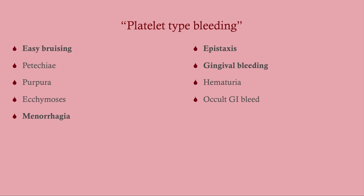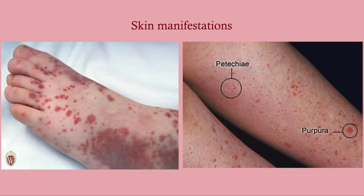Platelet-type bleeding has several manifestations. The most common are easy bruising — patients get bruises and don't know where they came from — petechiae, purpura, ecchymosis, and menorrhagia, where women bleed heavily through multiple tampons. Also epistaxis (nosebleeds), gingival bleeding — the gingiva is delicate and highly vascularized, so if you're bleeding from your gums without a reason, look for platelet deficiency — and hematuria and occult GI bleeds. Petechiae and purpura differ mainly by size and can become confluent.